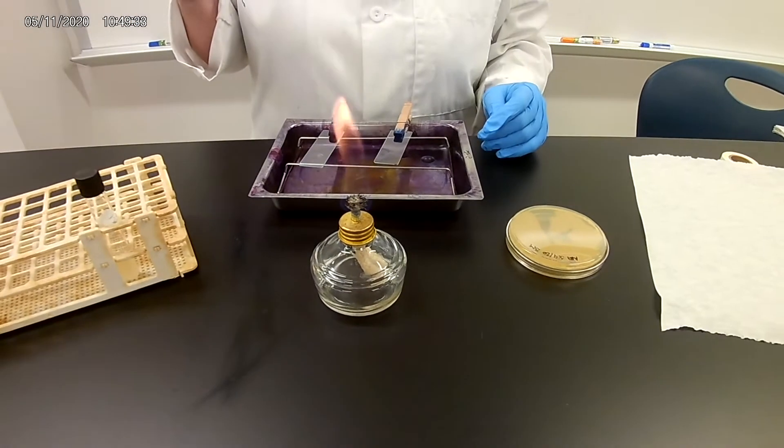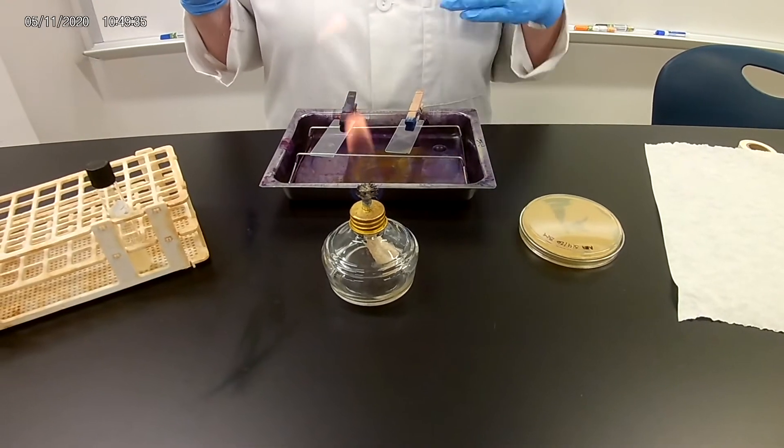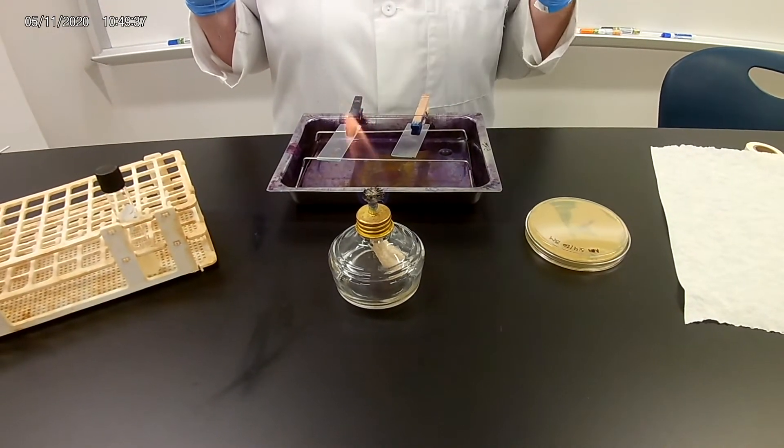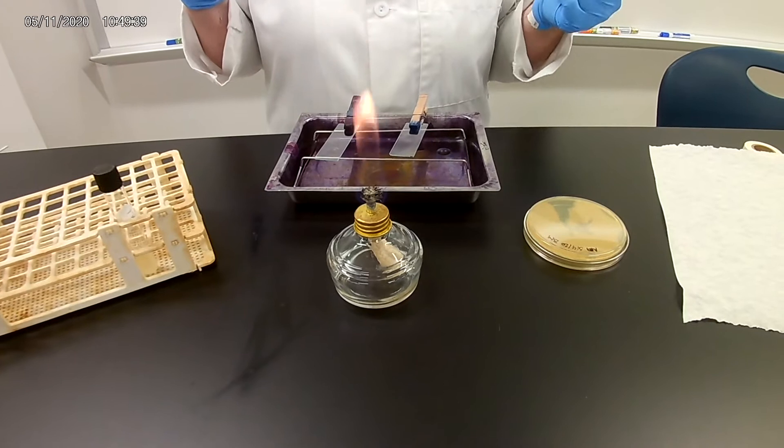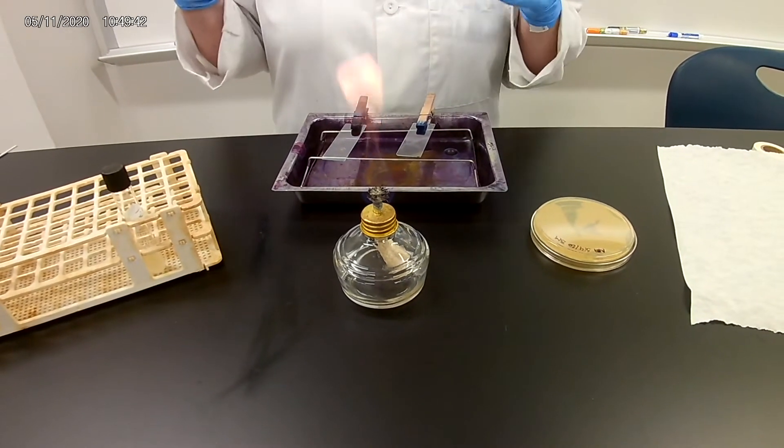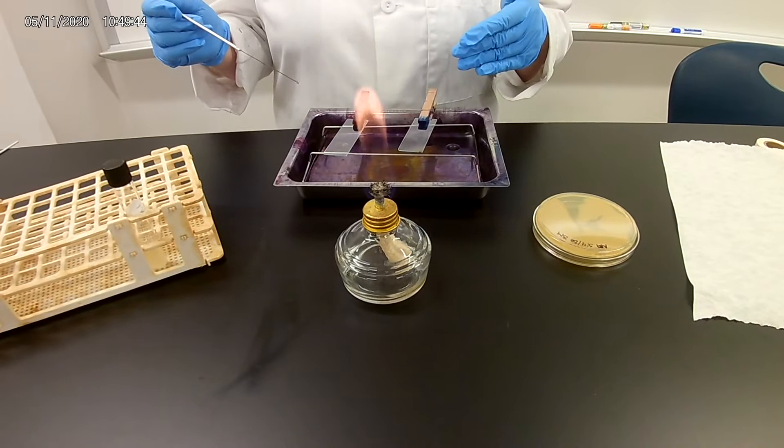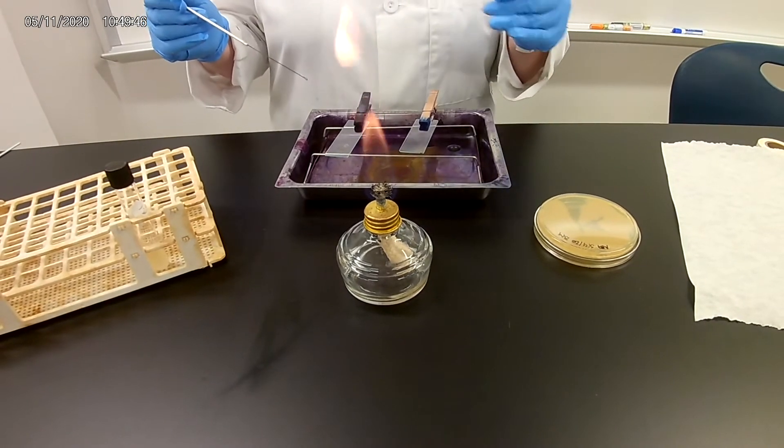I'm going to show you how to do a bacterial smear. You're going to have to do this before you do any type of staining, whether it's a gram stain, simple stain, or spore stain. The purpose is you've got to get the bacteria on the slide before you can stain it so you can see it.